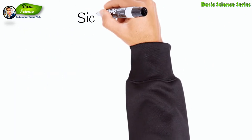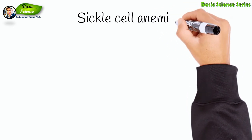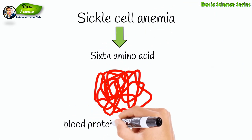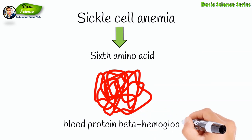The human disease sickle cell anemia is caused by a genetic mutation in the codon for the sixth amino acid of the blood protein beta-hemoglobin.